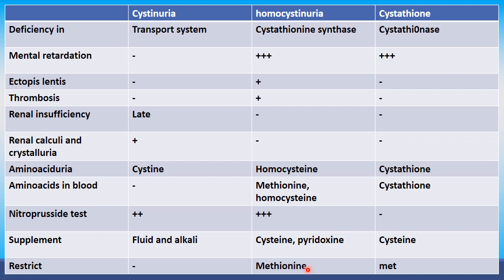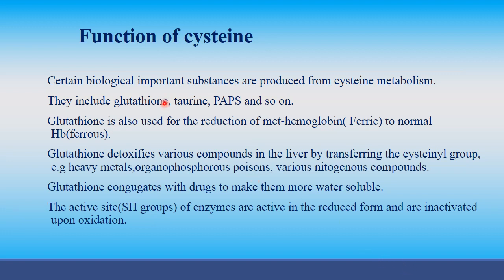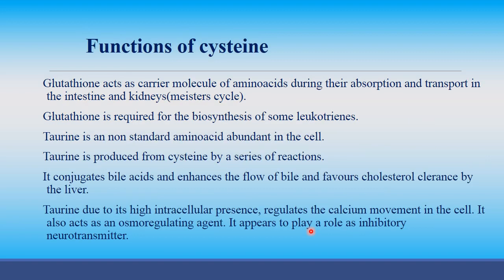Functions of cysteine: it is a biologically important substance. Products of cysteine metabolism include glutathione, taurine, and PAPS. Glutathione is used in reduction of methemoglobin — ferric to ferrous conversion. Glutathione detoxifies various compounds in the liver by transferring a cystinyl group, and conjugates with drugs to make them more water soluble. Glutathione is a carrier molecule for amino acids during absorption and transport in the intestine and kidney, and is required for biosynthesis of some leukotrienes.